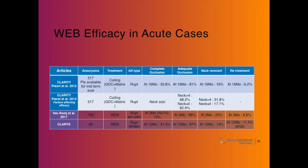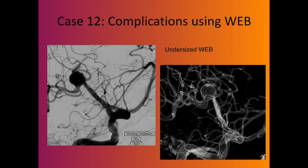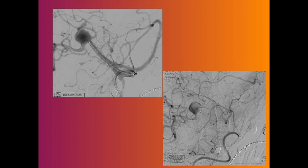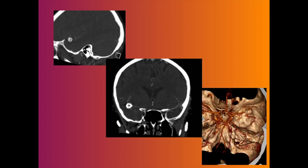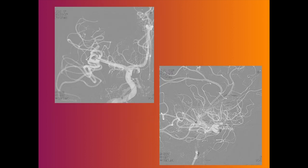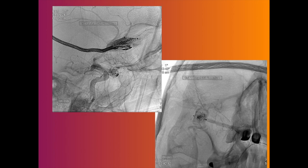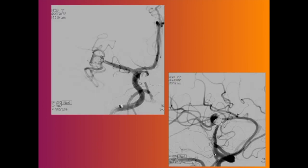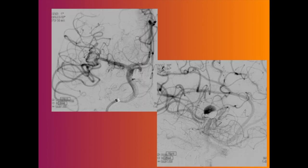WEB does have problems — sizing is a big issue, catheter tracking can be difficult. Here is a case where an MCA aneurysm was treated with WEB by a colleague, but the WEB is undersized and underfilling — the aneurysm is not protected. I had to go in, place coils around it, protect the aneurysm, and close it. You can see the coils protecting the aneurysm; when happy, you stop and can see stasis, with follow-up showing occlusion.